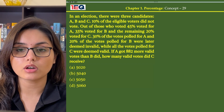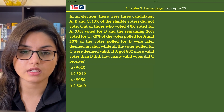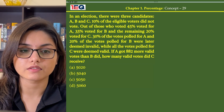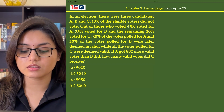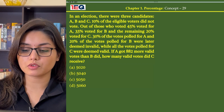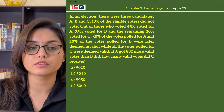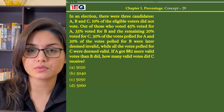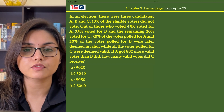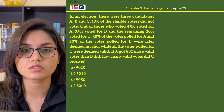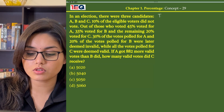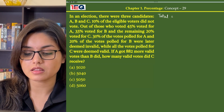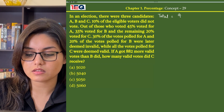If A got 882 more valid votes than B did, how many valid votes did C receive? To solve this, let's assume that the total number of eligible voters were 100x. Since 10% did not vote, the total votes cast become 90x.